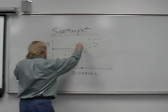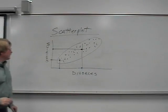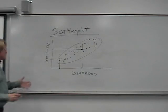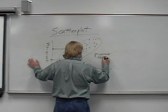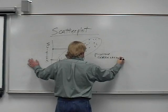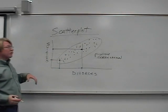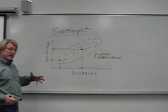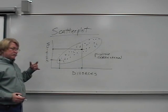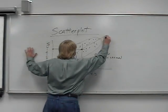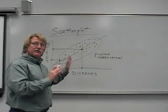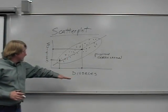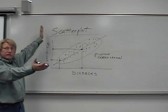What we end up getting is a scatterplot where each dot represents a particular state's score on the divorce rate and suicide rate. When you draw a circle around these things, you can see a clear pattern — in this case, what we call a positive correlation. Using the regression line, I find the line goes from lower left to upper right. Every time you see that, you know it's a positive correlation, meaning as the divorce rate goes up, the suicide rate goes up.